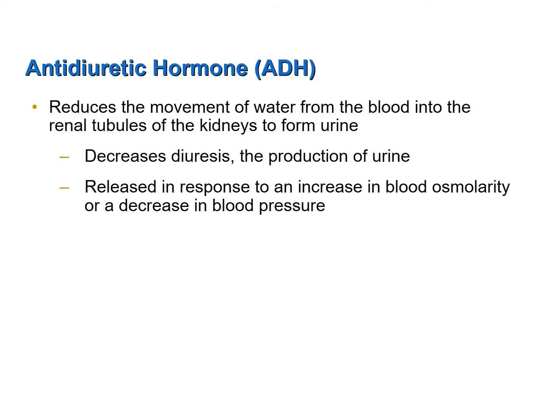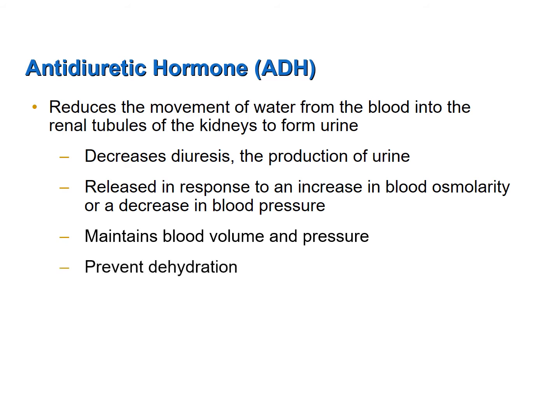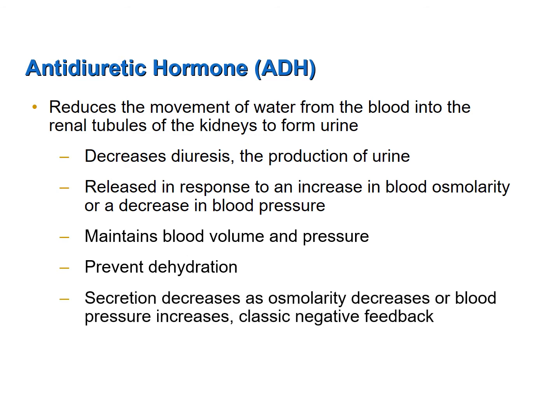Why would you want a reduction in urine production? If you were not consuming sufficient amounts of liquids, the result would be a decrease in blood volume, a decrease in blood pressure, and an increase in the concentration of solutes in your blood — an increase in blood osmolarity. Therefore, a decrease in blood pressure or an increase in blood osmolarity both stimulate the release of antidiuretic hormone, which helps maintain blood volume and pressure by retaining more water in the blood and helps prevent dehydration. ADH secretion is regulated by a classic negative feedback mechanism: as blood osmolarity decreases or blood pressure increases back toward normal, further secretion of ADH is reduced.